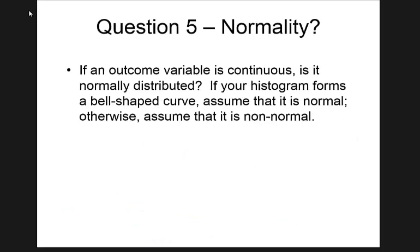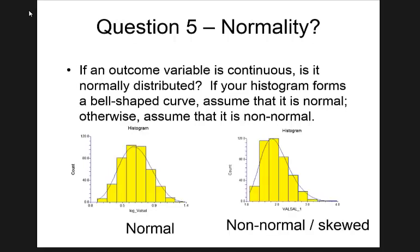Question five: normality. When you have a continuous outcome, you need to worry about whether it's normally distributed or skewed. Blood pressure is usually normally distributed; cholesterol is slightly skewed; HbA1c is slightly skewed; age is usually normal. But days of hospitalization, dose of drugs, and biomarkers are typically skewed — some markers are very skewed.